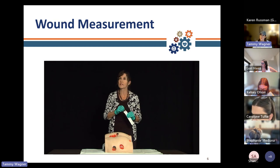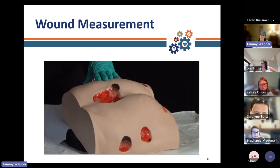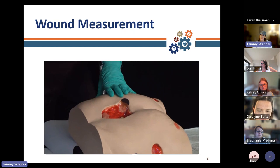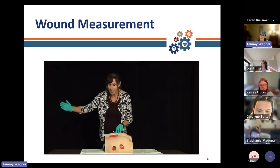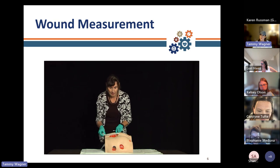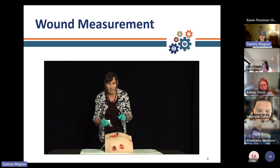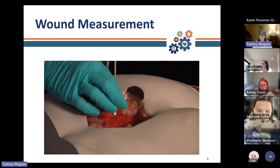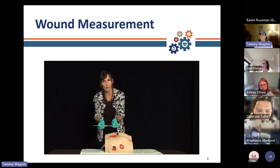When we talk about tunneling, a tunnel is generally a tract in the wound — it usually is one directional. Using a mannequin, I'll demonstrate what tunneling looks like. When assessing a wound, you'll use a sterile Q-tip. The patient's head would be at 12 o'clock, feet at 6 o'clock. I would measure length in head-to-toe orientation, width side-to-side, and depth using a sterile applicator held perpendicular to the base of the wound to determine depth. That's pretty straightforward for most clinicians.